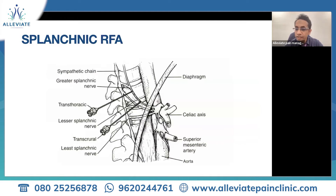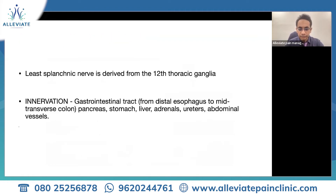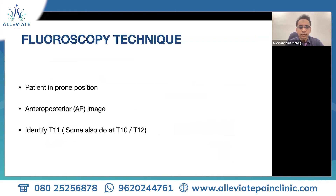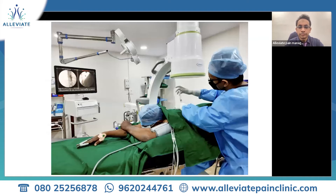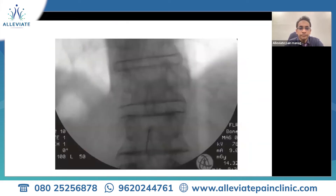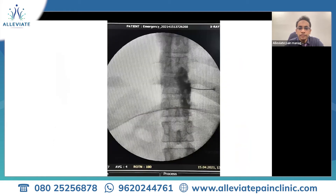What we do in cancer-related pain interventions is that we target these particular nerves. The splanchnic nerves are derived from the thoracic sympathetic ganglion. They are of three kinds: greater, lesser, and least splanchnic nerve. They innervate the GIT, the upper abdomen — stomach, pancreas, liver, etc. We use a fluoroscopy technique to do this procedure. This is a patient suffering from pancreatic cancer in whom we are doing this intervention — the splanchnic plexus block. Here you can see the fluoroscopic-guided technique we use.